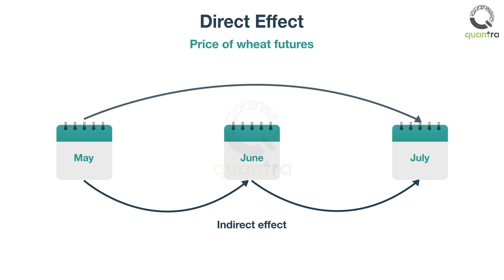But it is also possible to have some direct relationship between the price of wheat in May and July. Why does this happen? This can be due to fundamental reasons, such as a change in agricultural commodity pricing policy at a fixed time interval, say every two months.